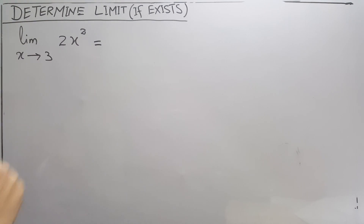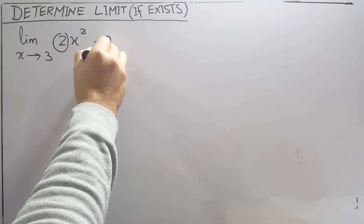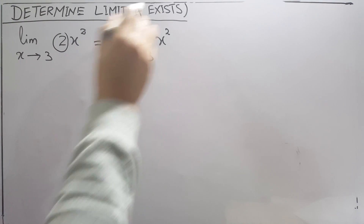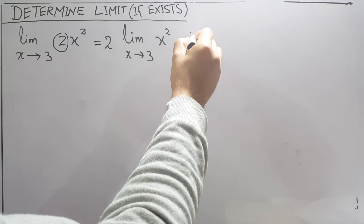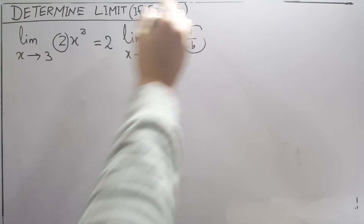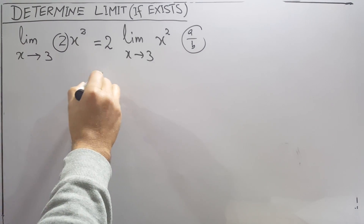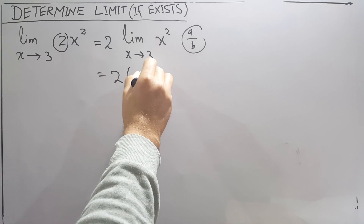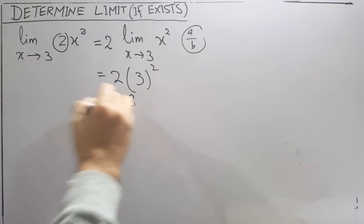A property of limits is that the limit does not apply to constants. So here 2 is a constant — we can take it out and write the limit separately. Another property is that if the limit is not in fraction form (a over b) and it's not giving you infinity, you can straight away substitute the limit value. Putting x=3 gives 3 squared = 9, and 2 times 9 is 18.